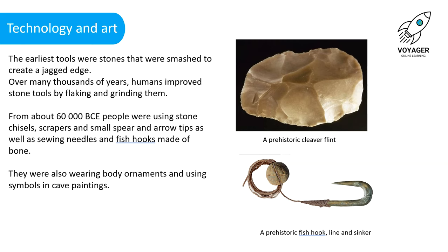Technology and art. The earliest tools were stones that were smashed to create a jagged edge. Over many thousands of years, humans improved stone tools by flaking and grinding them. From about 60,000 BCE, people were using stone chisels, scrapers and small spear and arrow tips, as well as sewing needles and fishhooks made of bone. They were also wearing body ornaments and using symbols in cave paintings. In this image we can see a prehistoric cleaver flint and a prehistoric fishhook line and sinker.